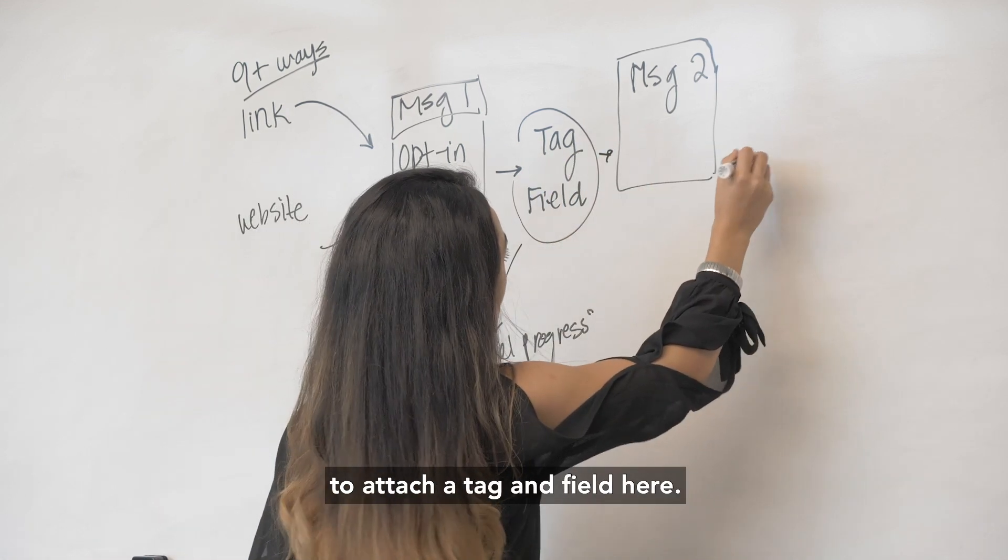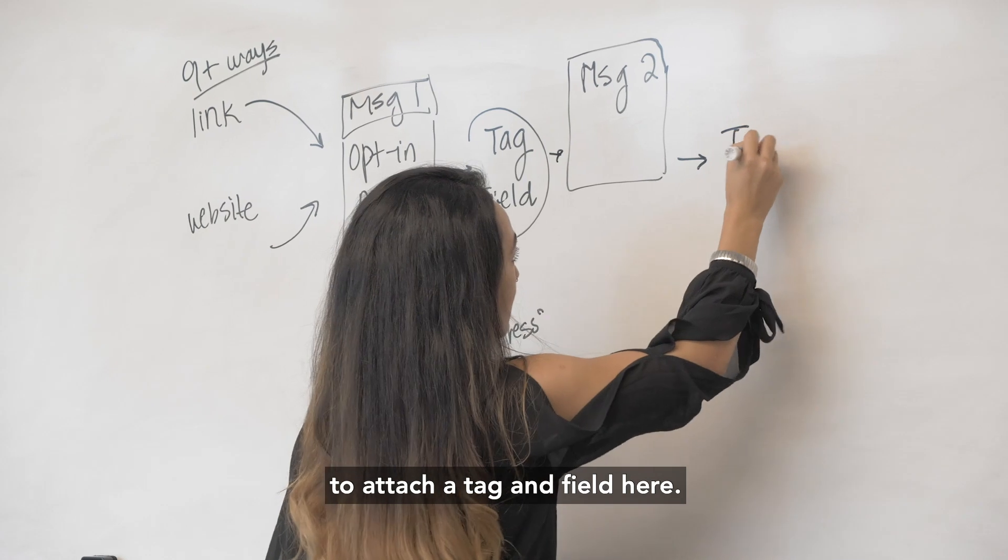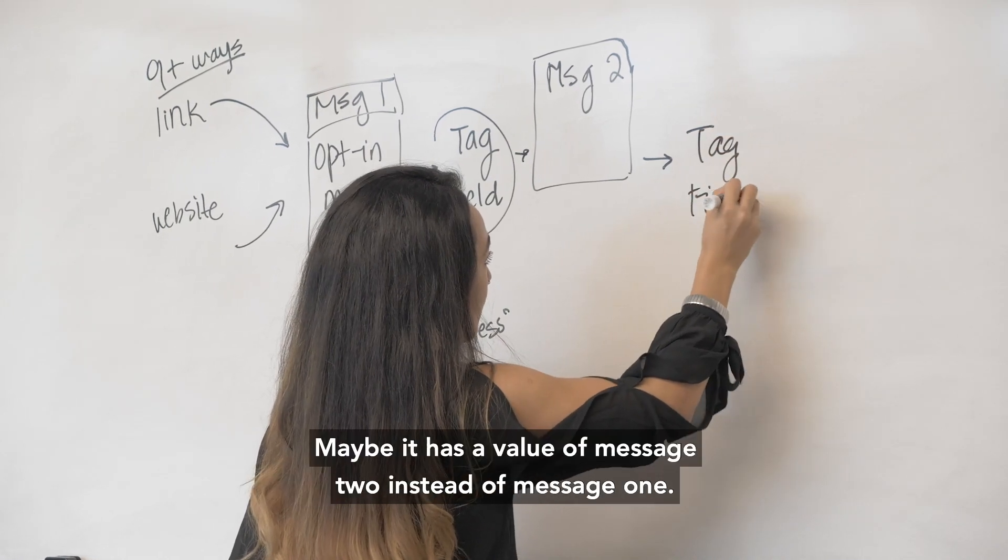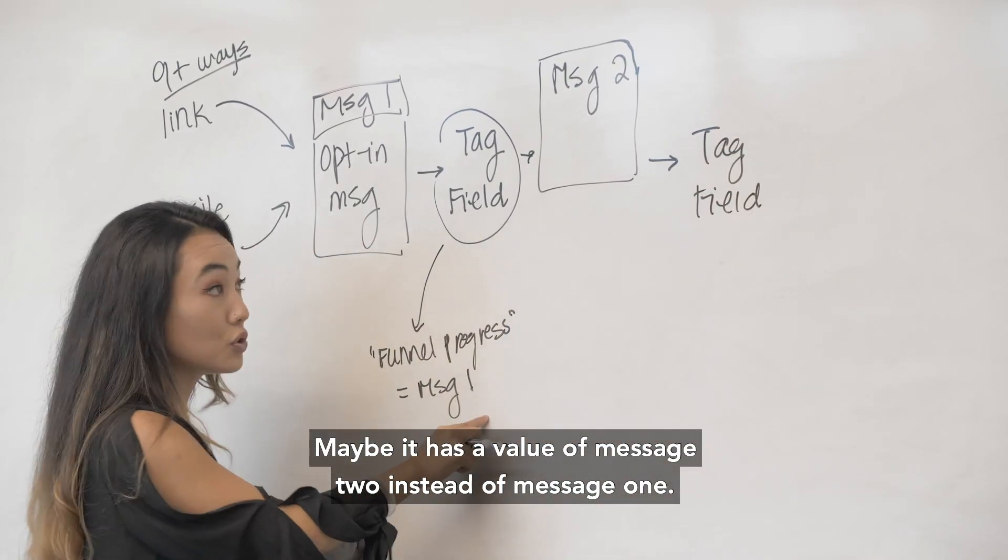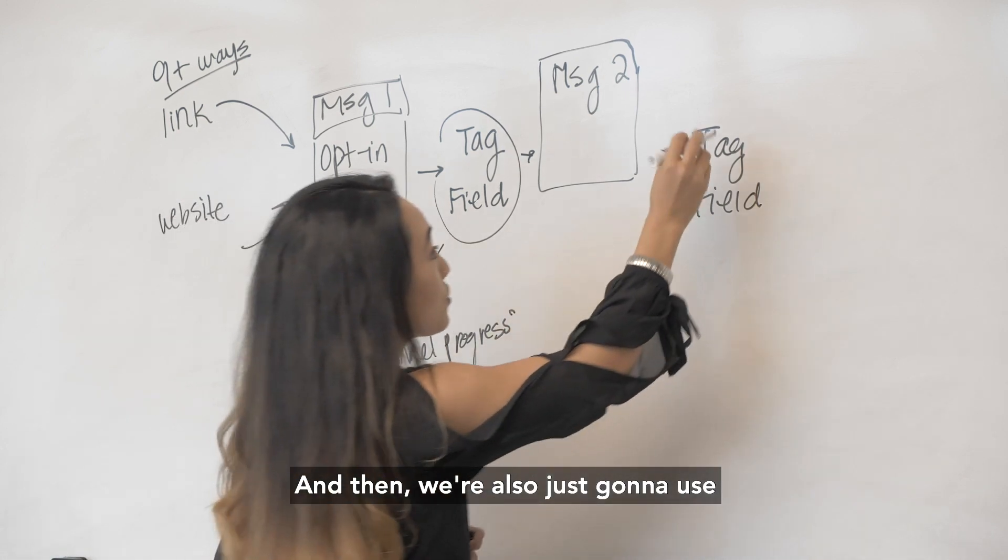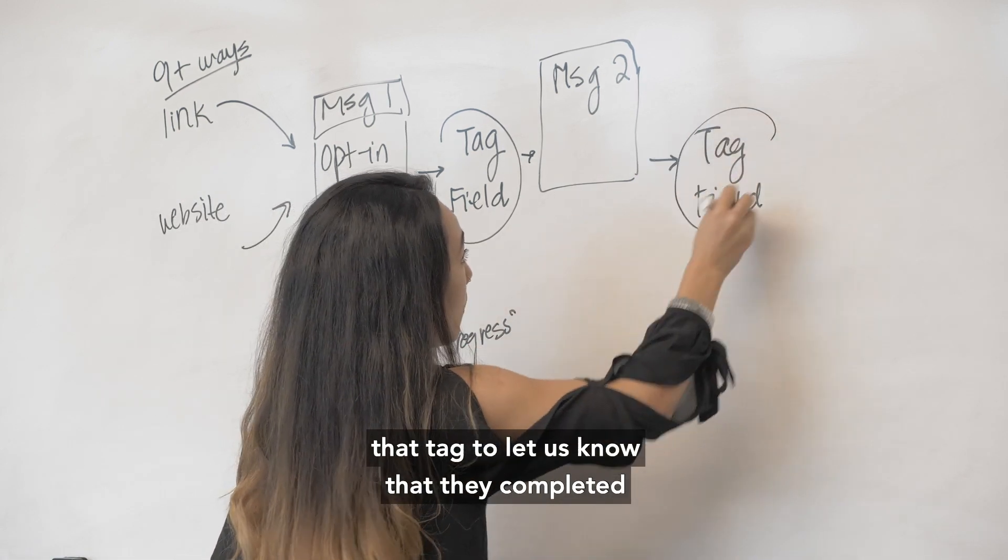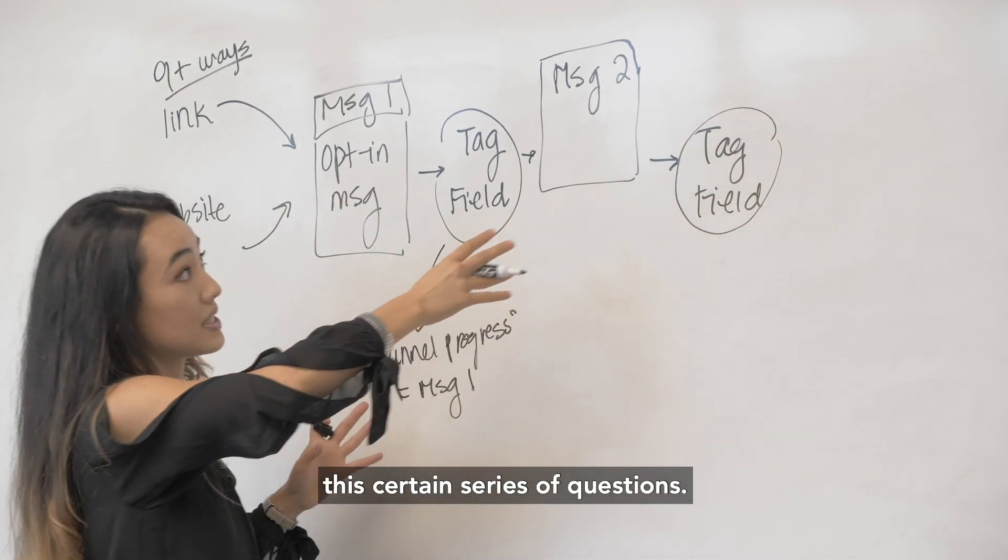Now from there we're also going to attach a tag and field here. We're going to update that same field, now maybe it has a value of message two instead of message one, and we're also just going to use that tag to let us know that they completed this certain series of questions.